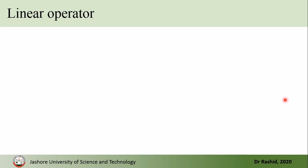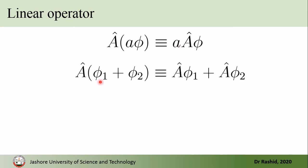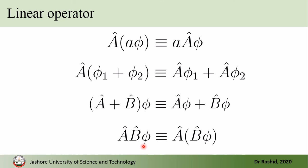Both the position and momentum operators are linear operators, meaning they follow certain rules. If A-hat is a linear operator and acts on a·phi, where a is a number and phi is a function, this is equivalent to a times A-hat acting on phi. Also, if the linear operator A-hat acts on the sum of two functions phi-1 and phi-2, this is equivalent to the sum of the two separate results. If two operators A-hat and B-hat are both linear, their sum acting on a function equals each acting on the function separately.